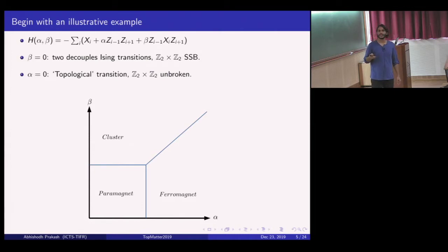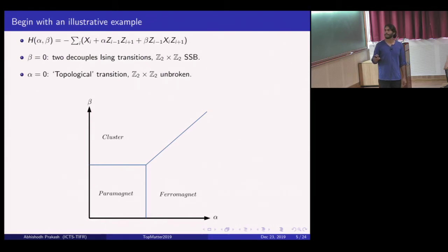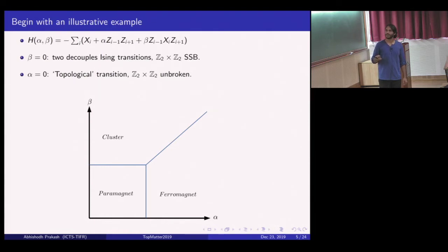It's very easy to understand the topology of the phase diagram, even if the exact numbers are unknown. Setting beta to zero gives a trivial Ising transition—two distinct Ising chains undergoing an Ising transition—a paramagnet separated by a phase transition to the ferromagnet. Setting alpha to zero gives a very interesting topological transition. Interestingly, even though these two are distinct phases separated by a phase transition, the cluster phase is not a trivial paramagnet, and what distinguishes it is what I'm most interested in.